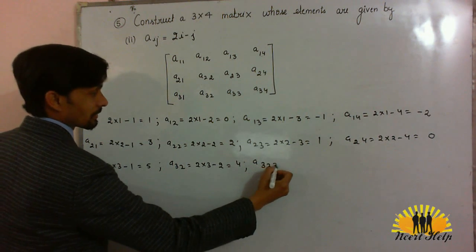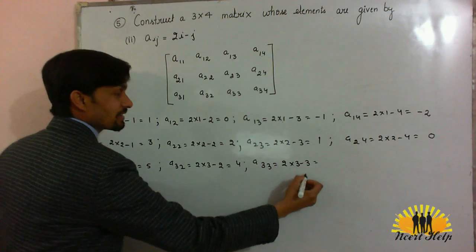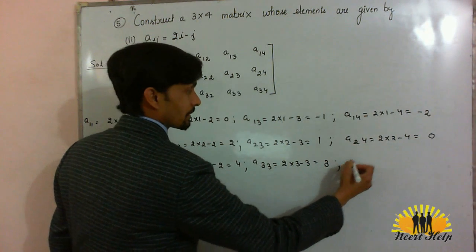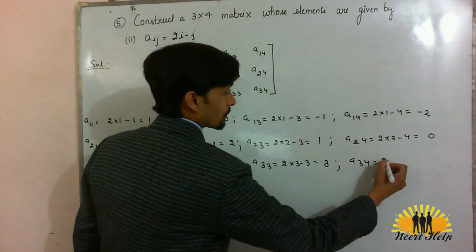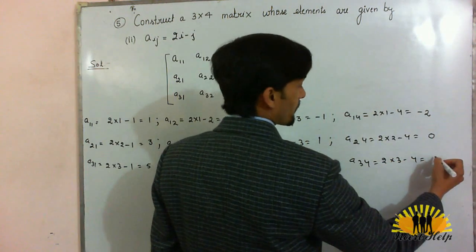A33, 2 into 3 minus 3. 6 minus 3 will be 3. A34, 2 into 3 minus 4. 6 minus 4 will be 2.